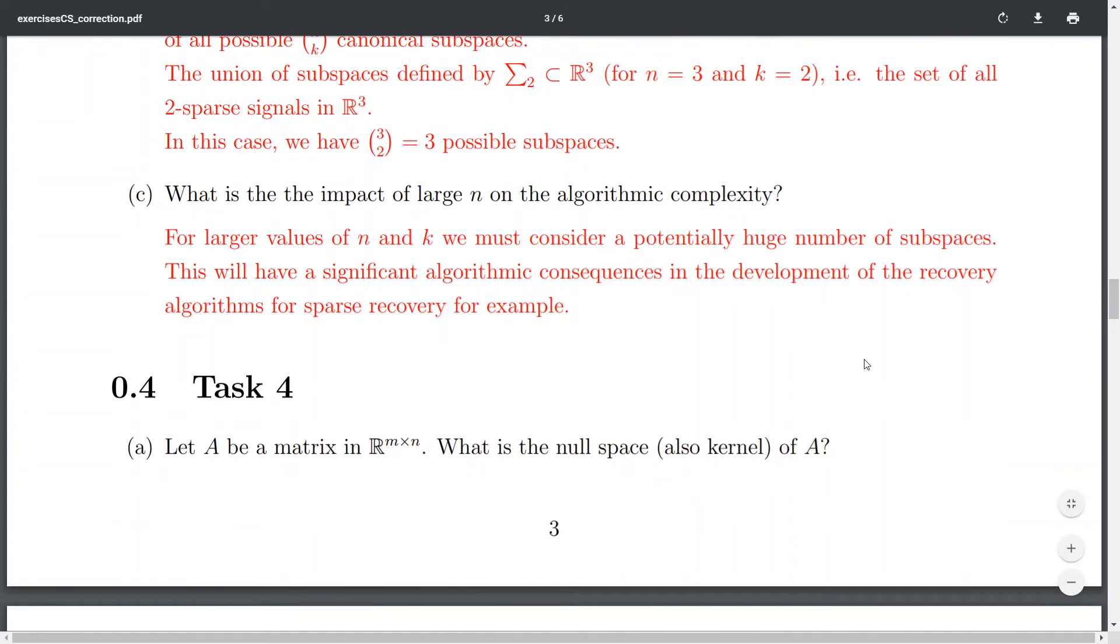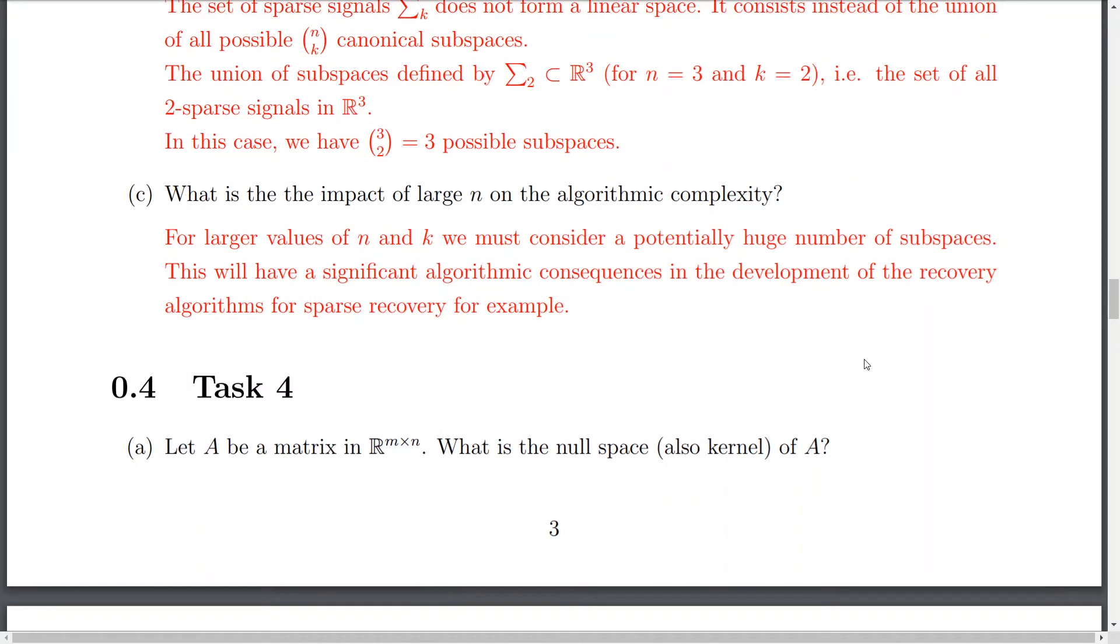And in this specific case, if we change n for 3 and k for 2, then all the subspaces sigma 2 that are included in R3 are actually the set of all two sparse signals or hyperplanes in R3. And in this case, like when you calculate using this binom, you end up having three possible solutions. So, either check it manually or with this way. So, finally, what is the impact of large n on the algorithmic complexity? So, for larger values of n and k, as I mentioned, we don't usually deal in compressed sensing with small values, but rather big ones.